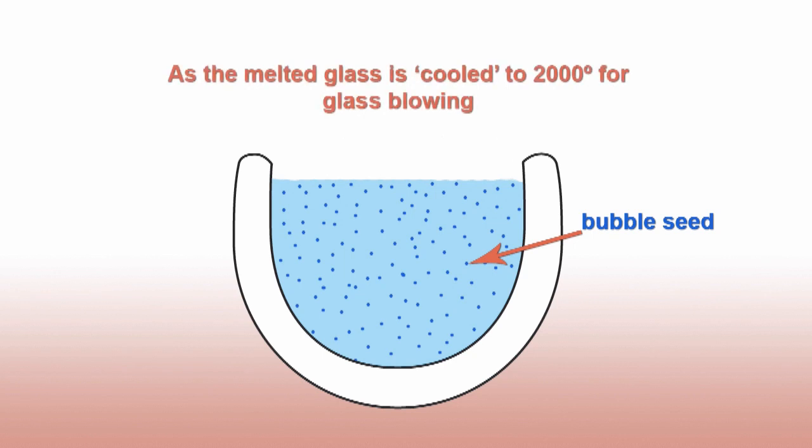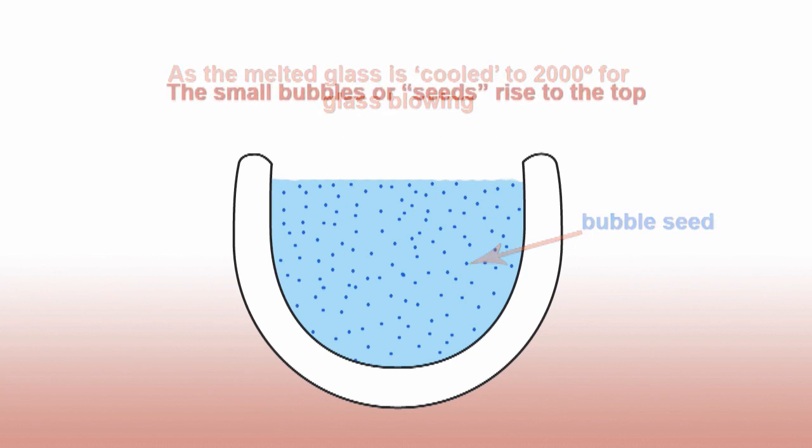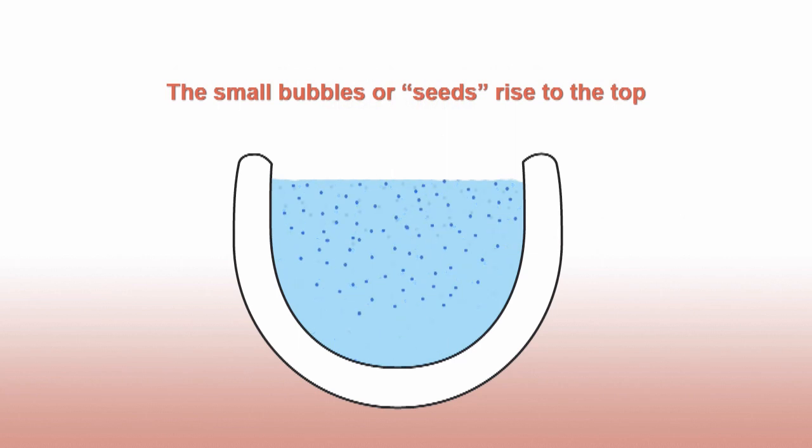As the glass is cooling, the small seedy bubbles rise to the surface. But sometimes the seeds can't make it all the way to the surface before the glass cools.